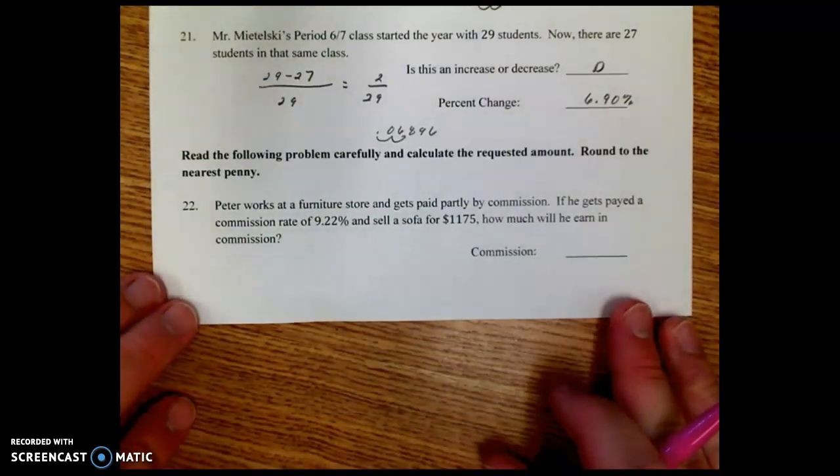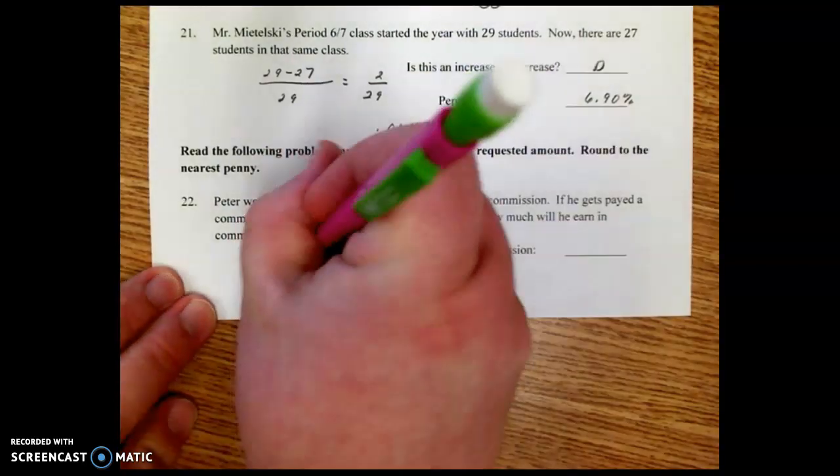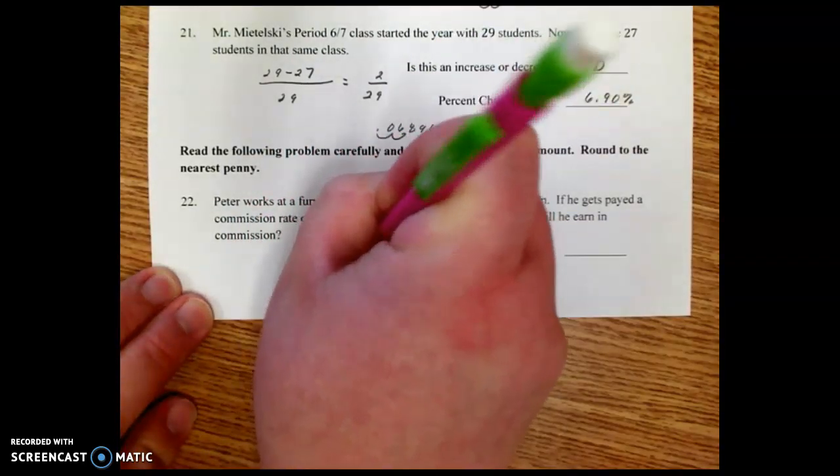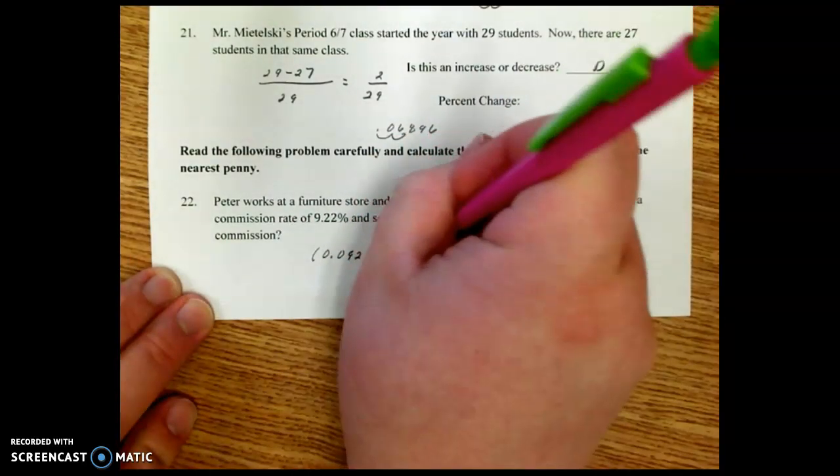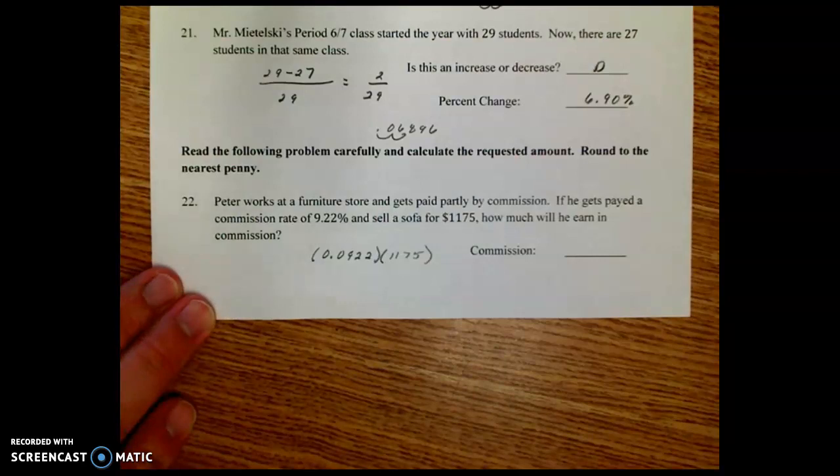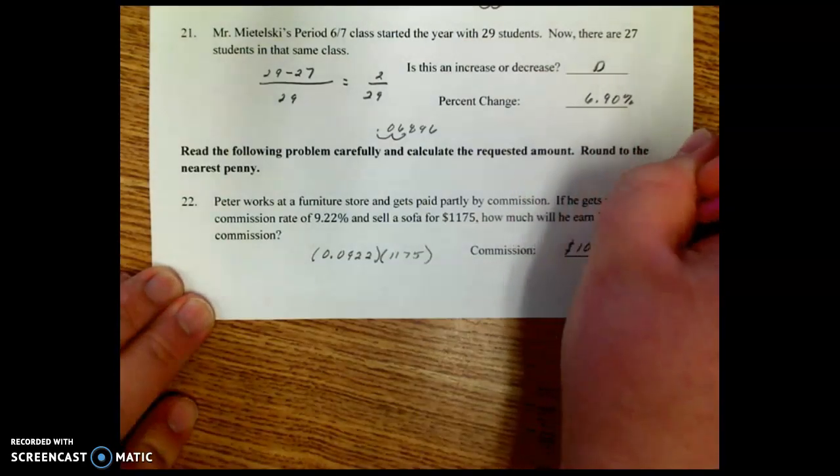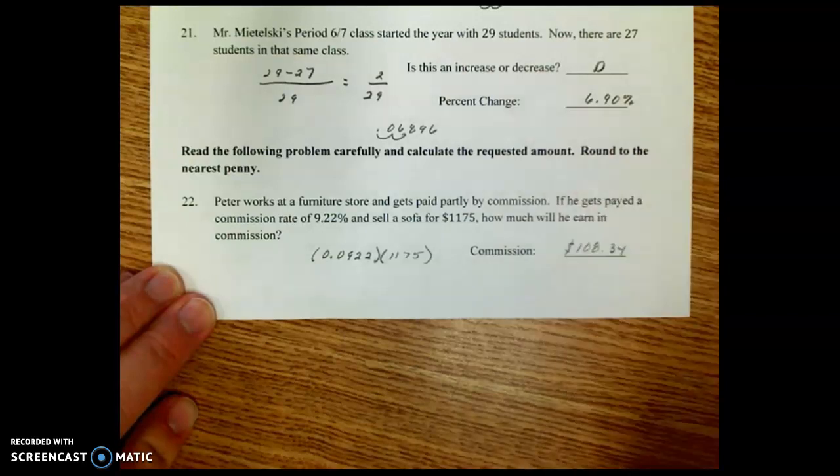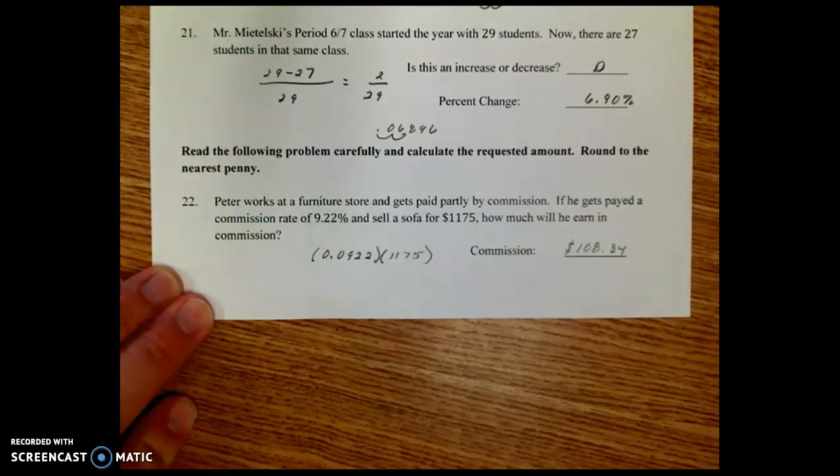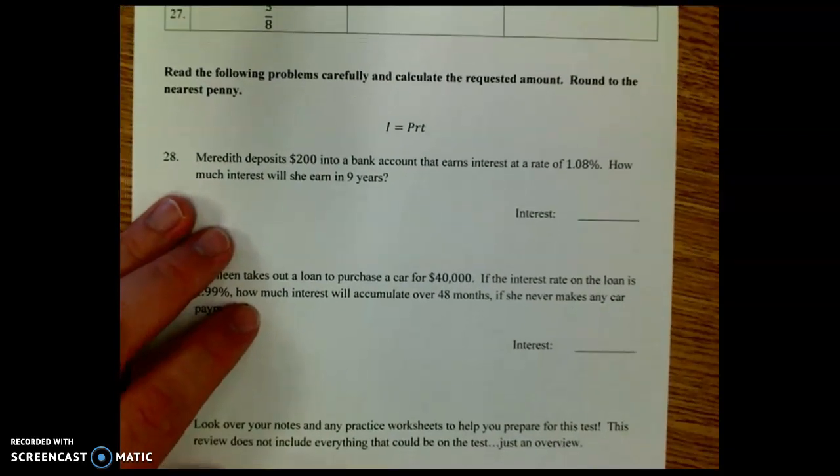Number 22 is commission. Commission, all we do is take the percent and multiply it by the amount. So we're going to take the percent, move it over two decimal places, and multiply it by $1,175. And we get $108.34. We're going to jump over the conversion table at the top and move down to the interest problems.